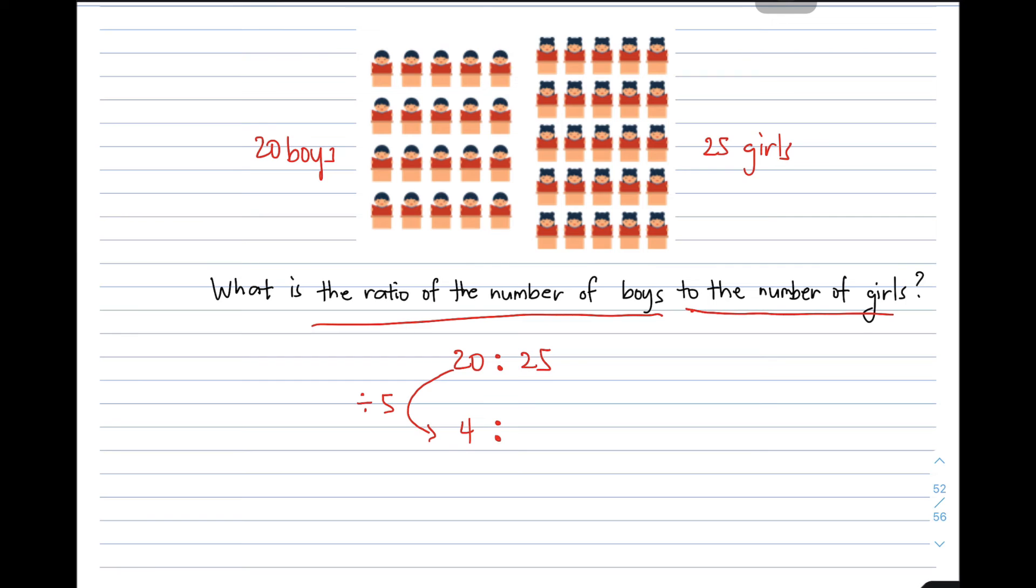And in this one, the 25, you need to divide it by 5 also. So 25 divided by 5 will give you 5.